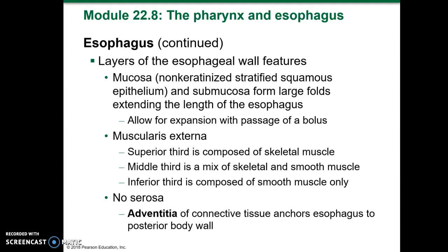The layers of the esophageal wall include the mucosa, which is a non-keratinized stratified squamous epithelium. The submucosa forms large folds that extend the length of the esophagus, allowing expansion when a bolus passes through. The muscularis externa consists of a superior third that is mostly skeletal muscle, a middle third that is a mix of skeletal and smooth muscle, and an inferior third composed of smooth muscle only. There is no serosa; instead there is adventitia, connective tissue that anchors the esophagus to the posterior body wall.